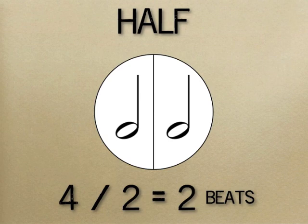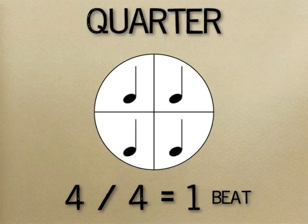Now divide the two halves into four quarters. A quarter note is one quarter, or one fourth, of the whole note. Four divided by four equals one, so a quarter note gets one beat.